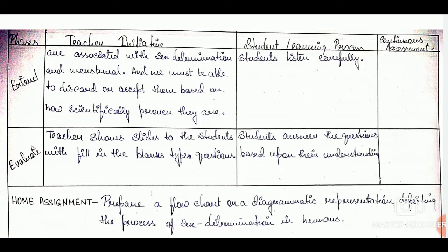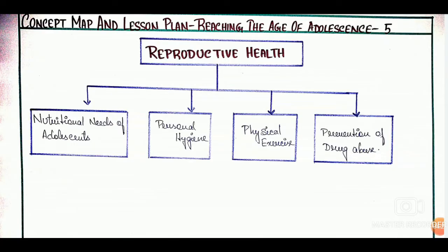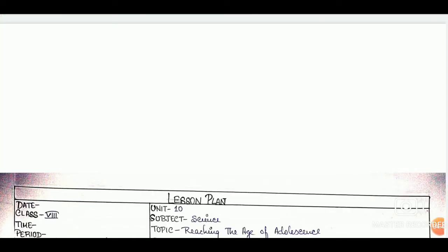Now we will move on to the 5th lesson plan. This is the concept map of the 5th lesson plan. After the concept map we have the details: date, class, time, period, unit, subject, and topic.